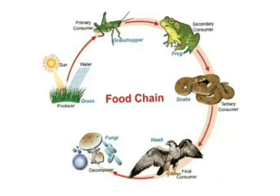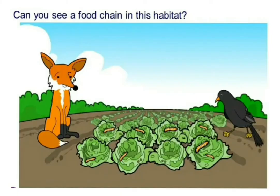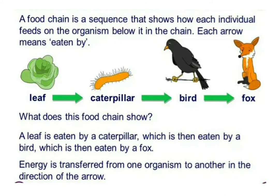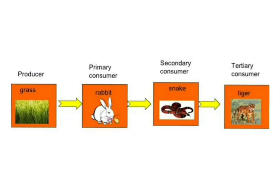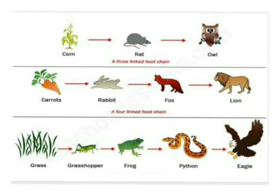Each organism in an ecosystem is dependent on the other, primarily for food, and this forms a food chain. A food chain shows feeding relationships — it is a linear relationship of organisms, each dependent on the next as a source of food, with transfer of matter and energy from organism to organism. For example: grass is eaten by a rabbit, the rabbit is eaten by a snake, and the snake is eaten by a hawk. The arrow indicates what is eating what.